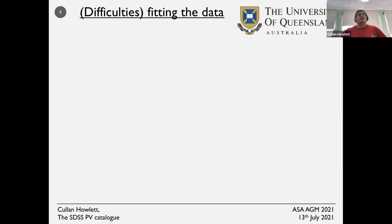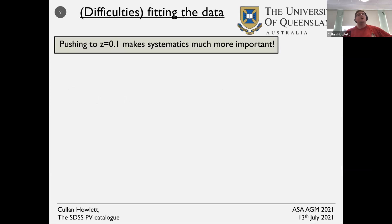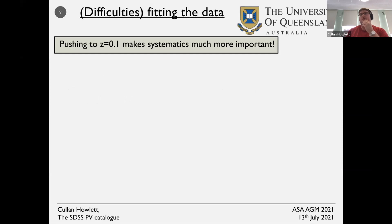This doesn't come without difficulties. One thing we found with the SDSS peculiar velocity catalogue is that pushing out to redshift 0.1 really does make systematics much more important. They're already an issue when trying to do empirical distance relationships — you can ask anyone in the supernova, Tully-Fisher, or fundamental plane communities. When we push out to redshift 0.1 we have to consider things we might have assumed we wouldn't need to worry about.